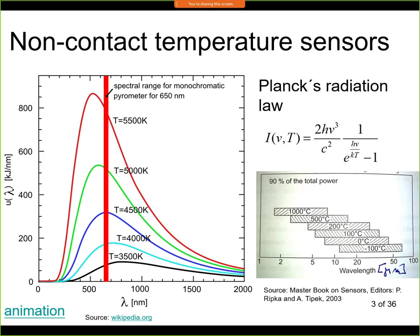The visible spectrum is roughly between 350 and 750 nanometers. Only when temperature is high enough can we see the radiation with our own eyes. At lower temperatures, the peak energy is in the IR spectrum rather than the visible range.